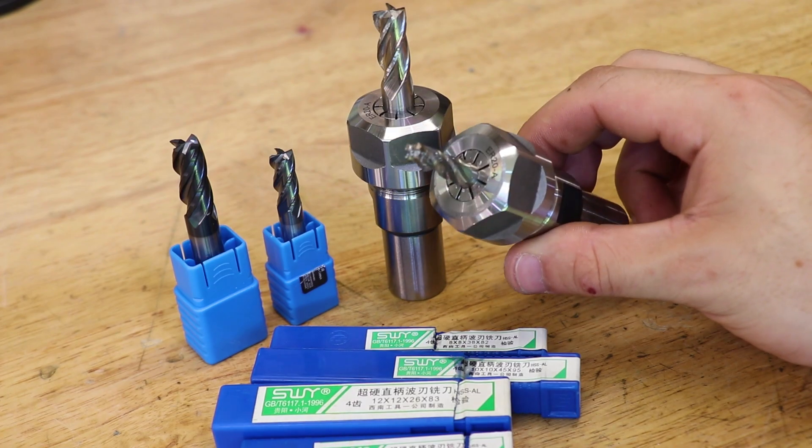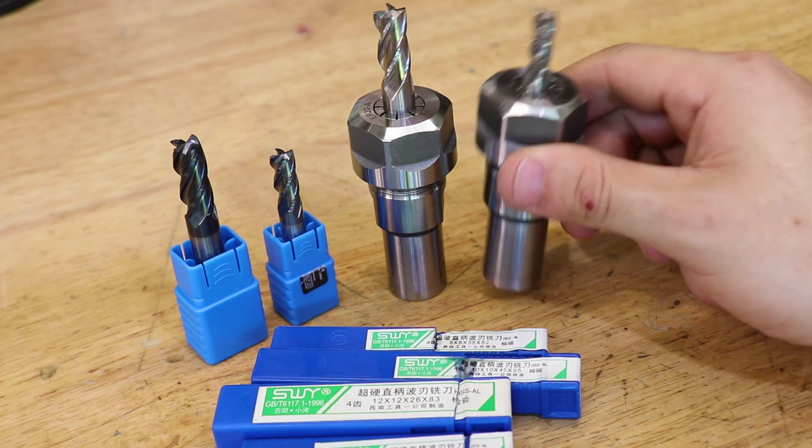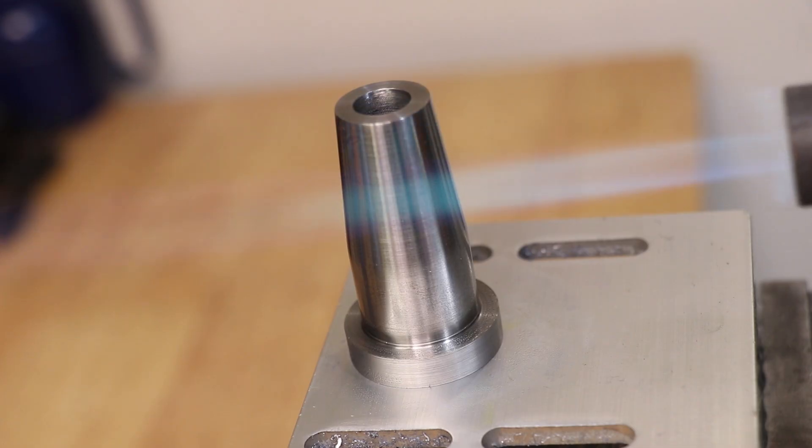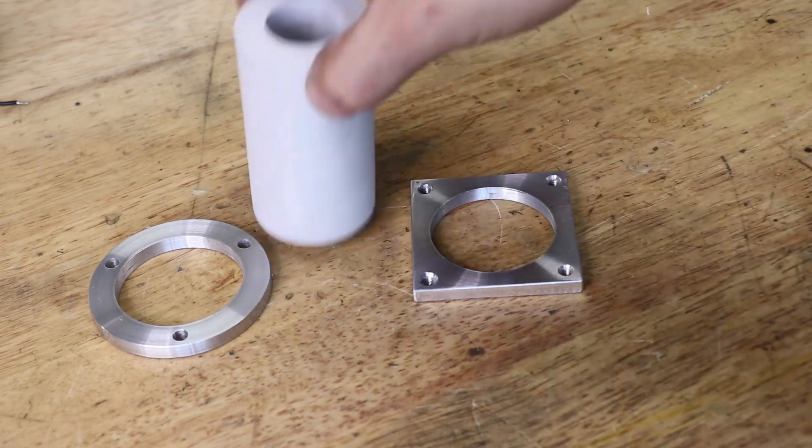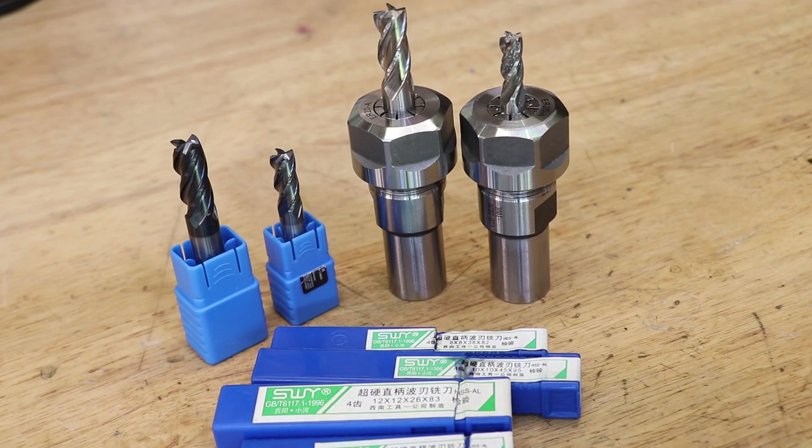I could hold these end mills in my ER20 collet holders but since I have solid carbide I wanted to try something new. For a very long time I wanted to try some heat shrink tooling or shrink fit tooling. If you've never seen shrink fit tooling it's just another method to hold carbide end mills. We all know that when you heat metal it expands and when you cool it it contracts.